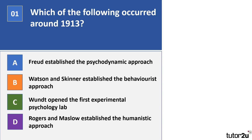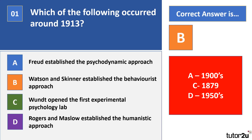First question: which of the following occurred around 1913? A. Freud established the psychodynamic approach. B. Watson and Skinner established the behaviourist approach. C. Wundt opened the first experimental psychology lab. Or D. Rogers and Maslow established the humanistic approach. Pause your video.